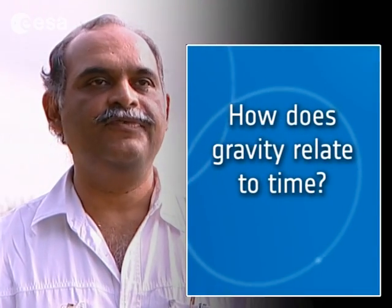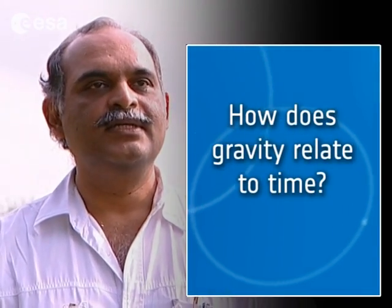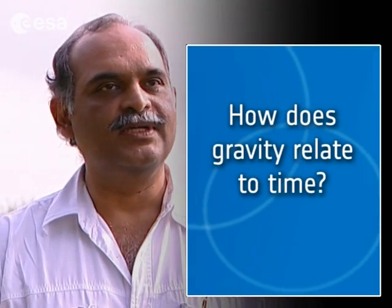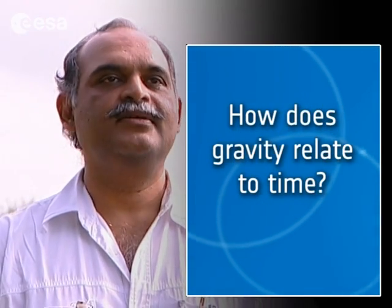If a clock is in a gravitational field, it can run slower or faster depending on where in the gravitational potential this clock is situated. And these are very large effects when you compare with the precision of the clocks used in Galileo.